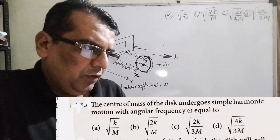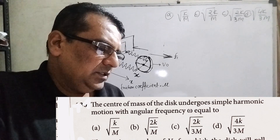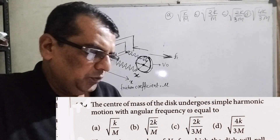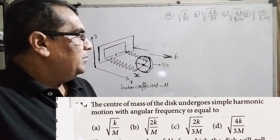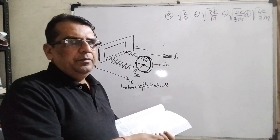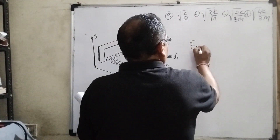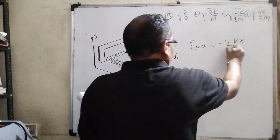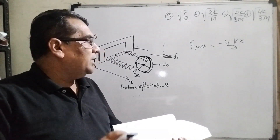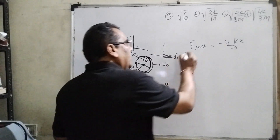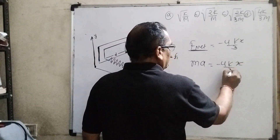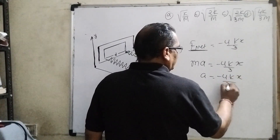Now the second question: the center of mass of the disk undergoes simple harmonic motion with angular frequency ω equal to — options are: root(k/m), root(2k/m), root(2k/3m), or root(4k/3m). From the first question, we already found f_net equals minus 4kx/3.